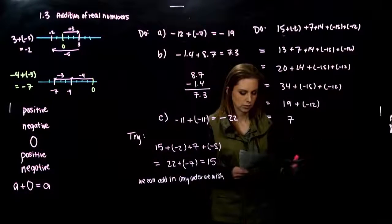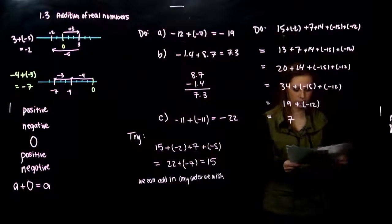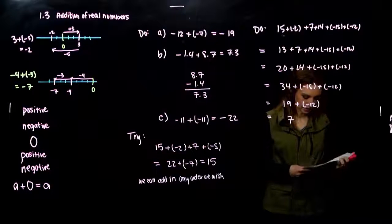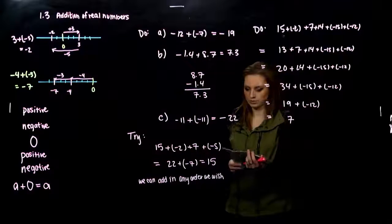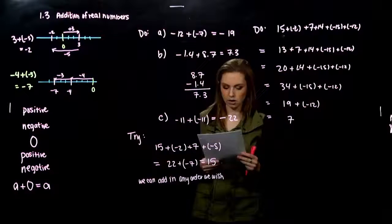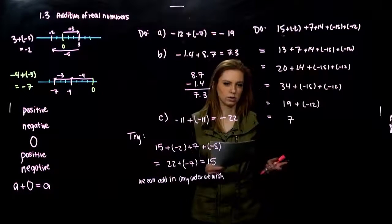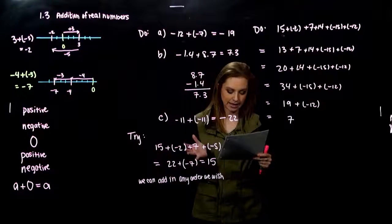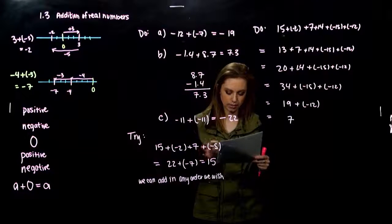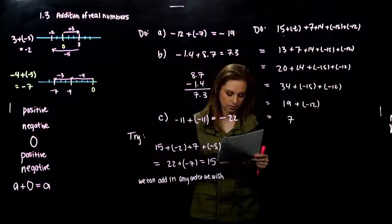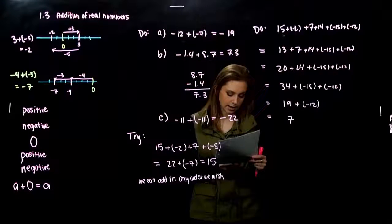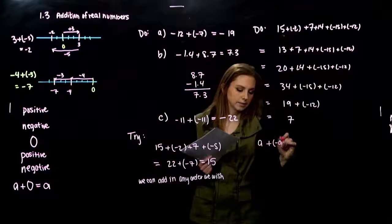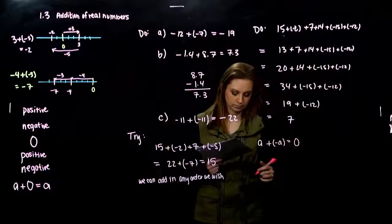Now some language for when we're talking about adding a negative: opposites are additive inverses. Two numbers whose sum is 0 are called opposites, or more mathematically, additive inverses. So for any real number A, the additive inverse of A, denoted negative A, is such that if I add A and its opposite together, I get out 0 every single time.